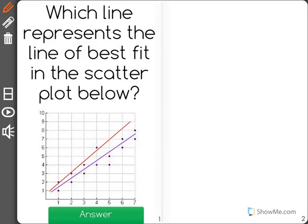Which line represents the line of best fit in the scatterplot below? Now what's important about the line of best fit is that it should go through essentially the center of the data.